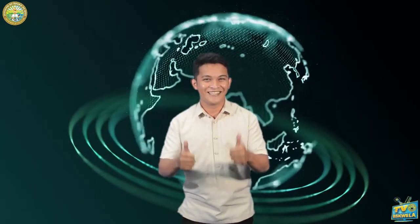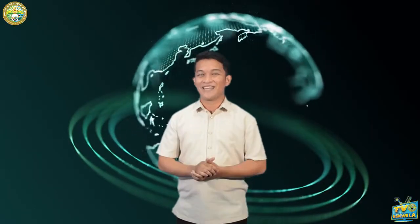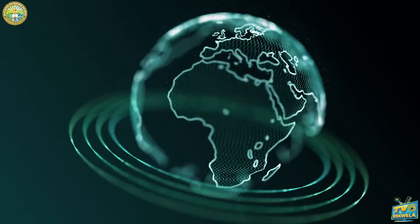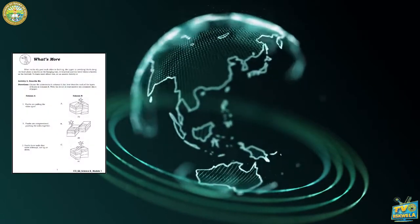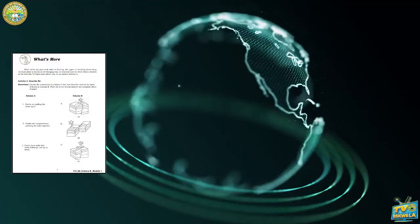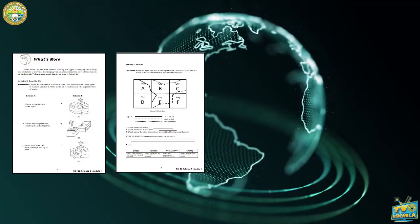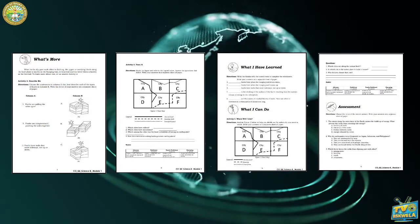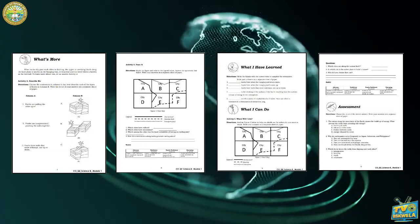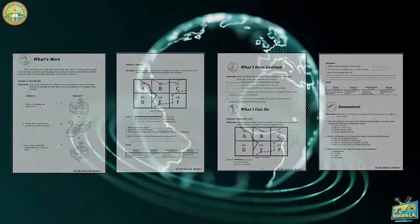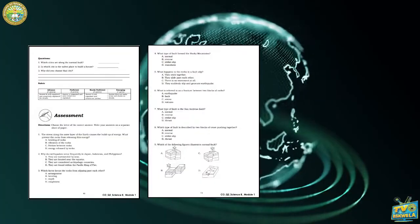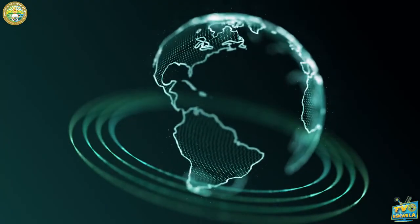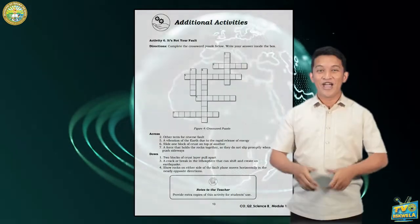Did you get it? Excellent job! To check your understanding about earthquakes and faults, you may answer Activity 2 — 'Describe Me' on page 7; Activity 3 — 'Trace It' on page 8; 'What I Have Learned' on page 9; and 'What I Can Do' on pages 9 to 10. Do not forget to answer your post-test on pages 10 to 12, and enjoy solving the crossword puzzle on page 13. Good job, learners!